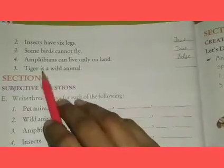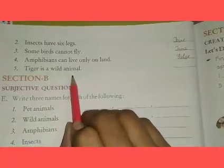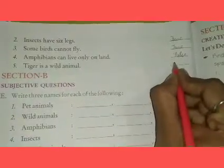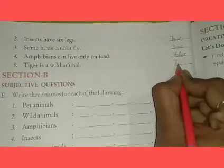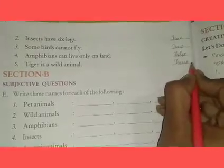Fifth: tiger is a wild animal. State true — tiger is a wild animal. True.